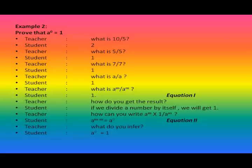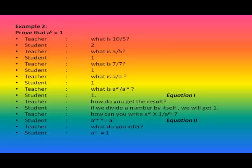Then the teacher asked the students, what is a^m divided by a^m? It is equal to 1. Students replied, the answer is 1. Then the teacher asked, how do you get this result? The students replied, if we divide any number by itself, we get 1. The teacher asked, how can we write a^m ÷ a^m in another way? The students immediately replied, a^(m−m) = a^0. The teacher asked, what do you infer from the above discussion? The students said, a^0 = 1.